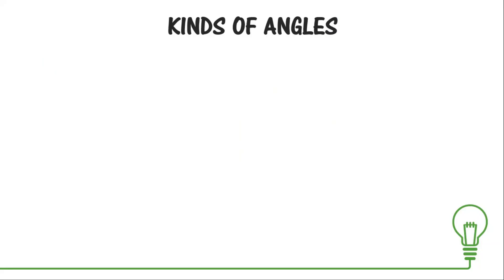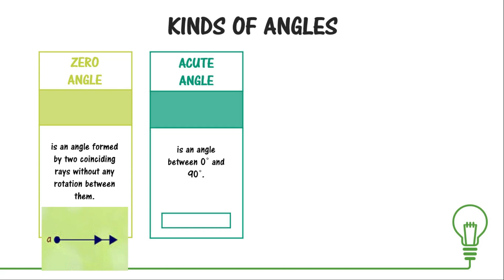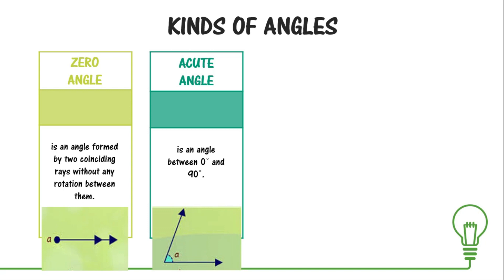There are different kinds of angles. The first one is the zero angle — an angle formed by two coinciding rays without any rotation between them, meaning its measure is zero degrees. Next is the acute angle, also called a sharp angle, which is an angle between zero degrees and 90 degrees exclusively — it cannot be zero degrees, it cannot be 90 degrees, just between them.